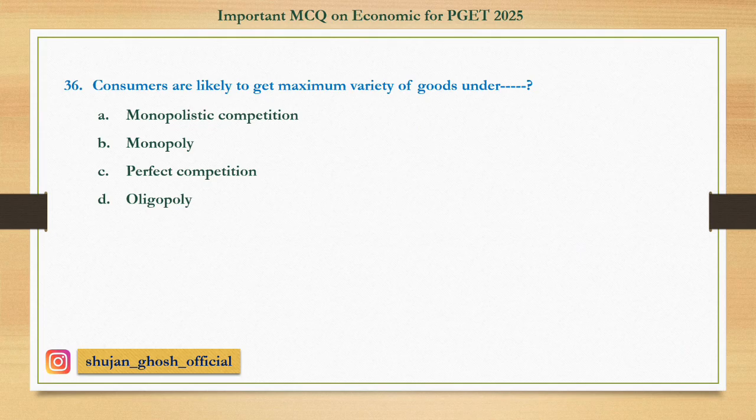Question number thirty-six: Consumers are likely to get the maximum variety of goods under — option A: monopolistic competition; B: monopoly; C: perfect competition; D: oligopoly. Answer: monopolistic competition.